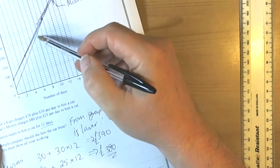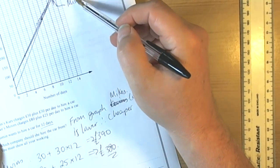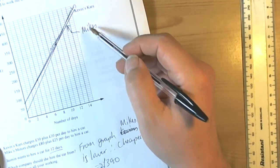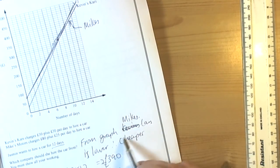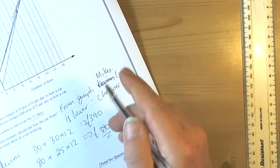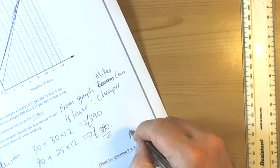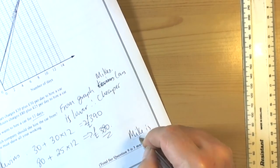That's why it's really important that you check all your workings and label carefully. Mike's was actually lower. From the graph, Mike's Cars is lower, so it's cheaper. And from our calculations we can also see that Mike's is cheaper.